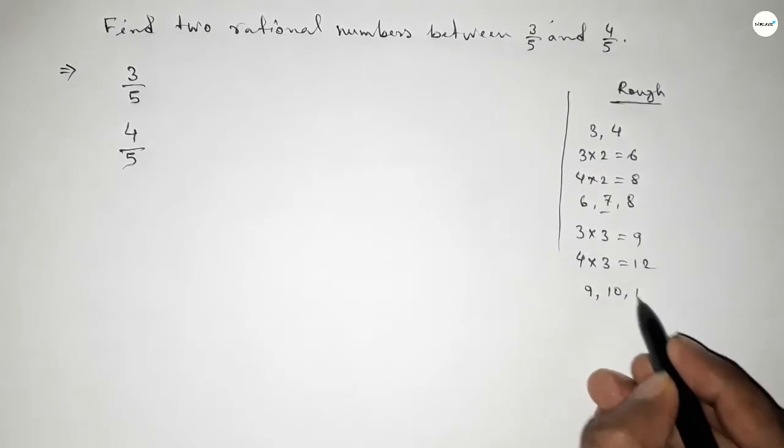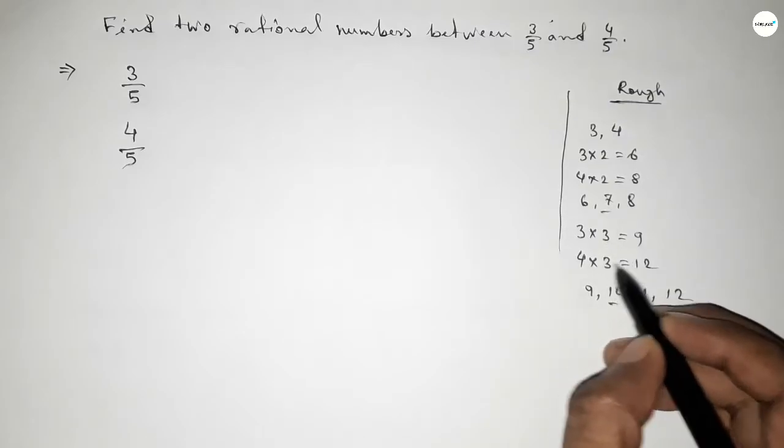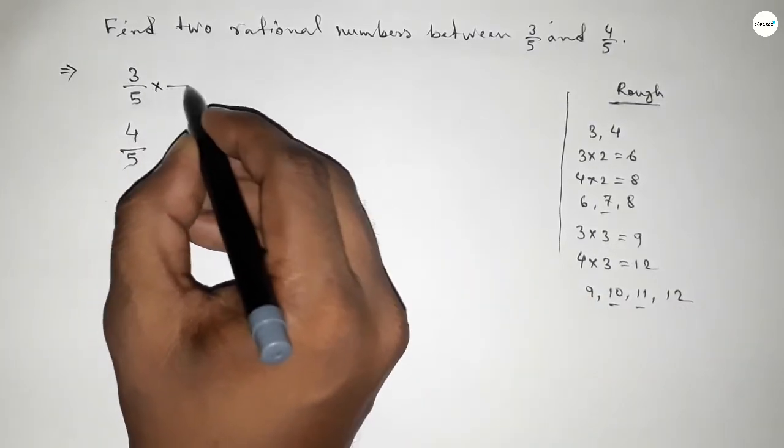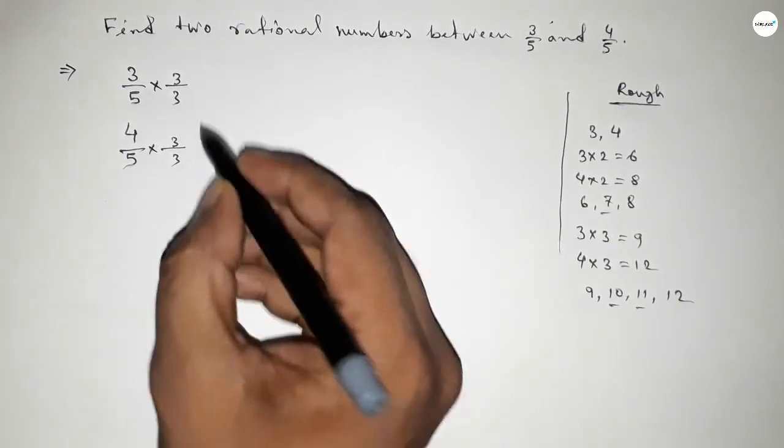Between 9 and 12 we can get two natural numbers, and with these two natural numbers we can form two rational numbers. So we should multiply both numerator and denominator by 3.